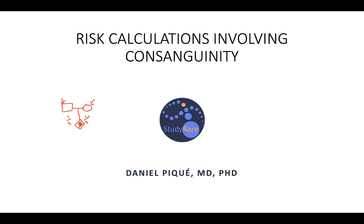However, when we have the situation of consanguinity, we can't always estimate these probabilities independently. Sometimes we have to account for the fact that these probabilities are, in fact, dependent on the same value — that is, the same affected relative. So, good to keep that in mind as we go along.